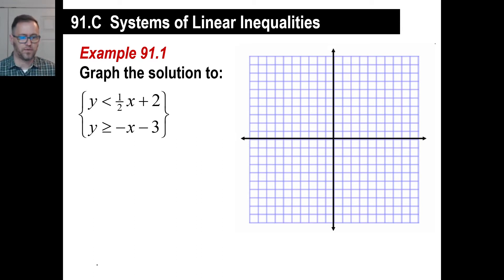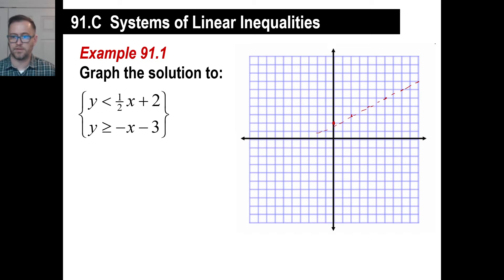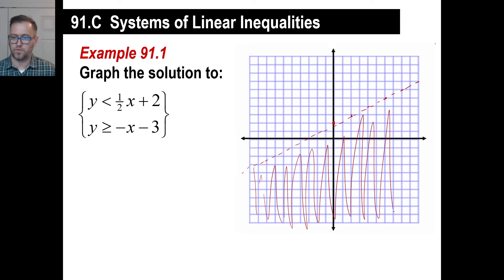All right, let's do this one first — I'll make these in different colors so you can see them better. So y is less than one half x plus 2. You know how to draw that — plus 2 is your y-intercept. And it's less than, so you need to draw a dashed line. The slope is one half, so up 1, over 2 — up 1, over 2 — and so on. It looks like that. You'll use a dashed line because you're not including that line — so it's everything down here. That's the solution to that.